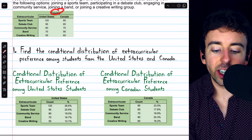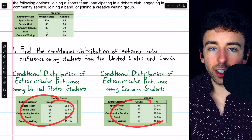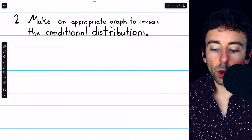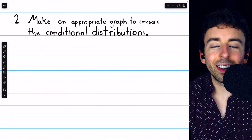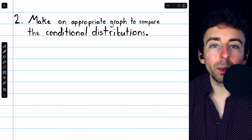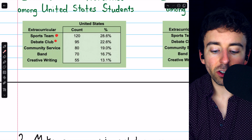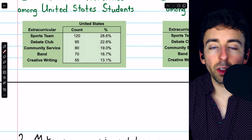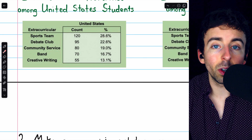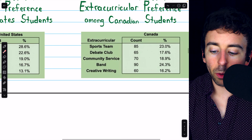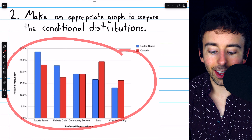Since country of origin had two values — United States or Canada — there are two conditional distributions we could consider. Second, we are asked to make an appropriate graph to compare the conditional distributions. Just as with the Titanic example, an appropriate graph here would be a side-by-side bar chart, where we can have a pair of bars for each of the preferred extracurriculars. Such a side-by-side bar chart would look like this.